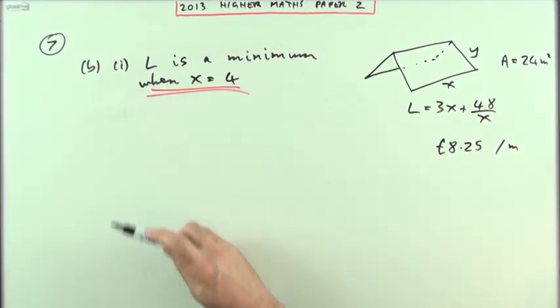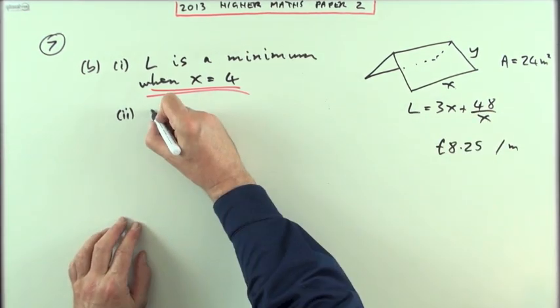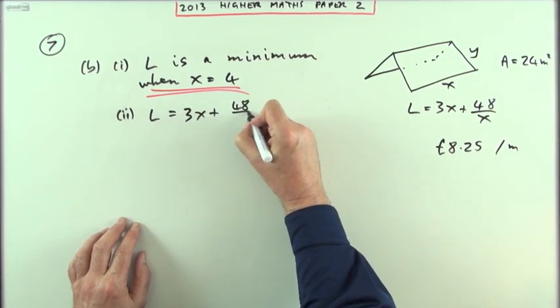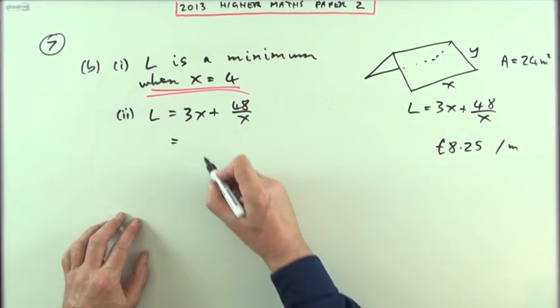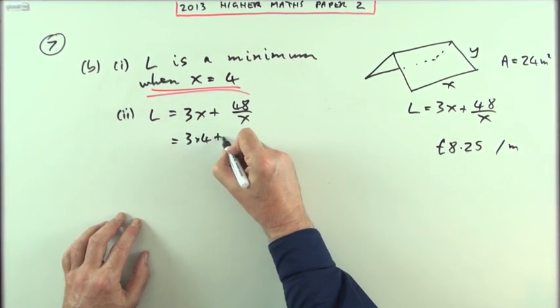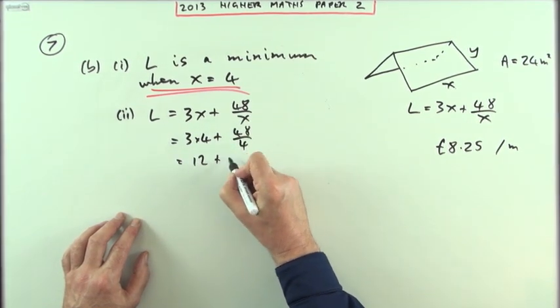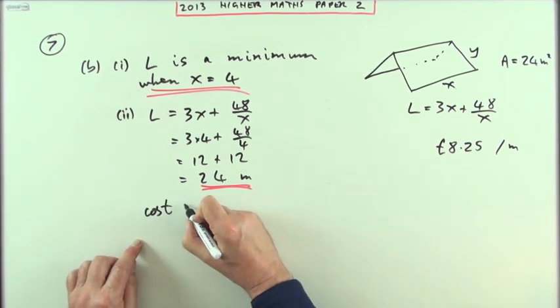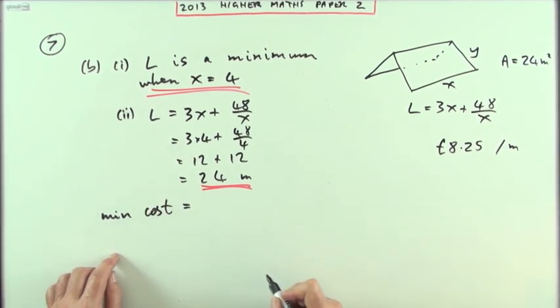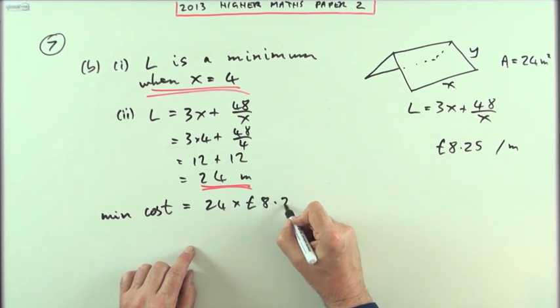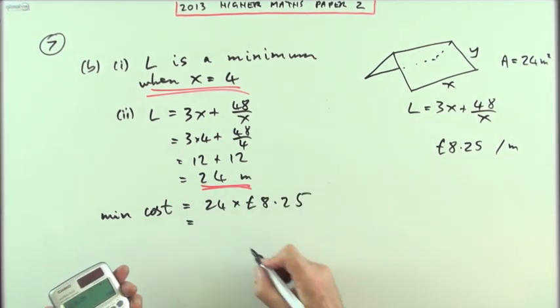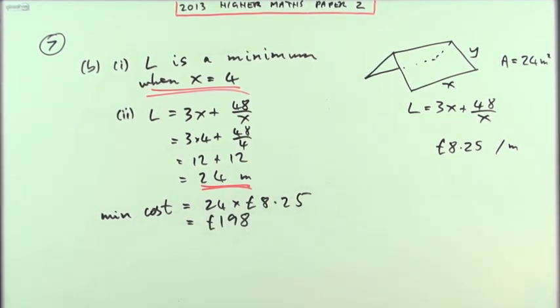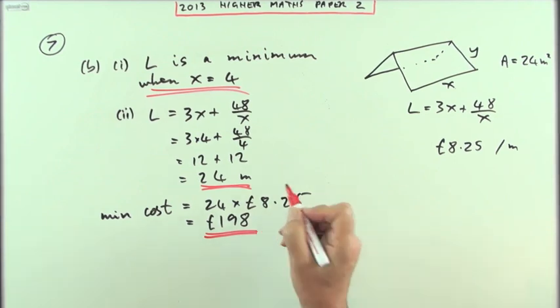And the second part, which says what is the minimum cost then of that frame. Well, I just need to know the length of the frame. There's the expression there so I could work out. L equals 3x plus 48 over x. There's no need to go back and work out what y is and so on. I've got the value of x here. So it'll be 3 times 4 plus 48 over 4, which is 12 plus 12, which is 24. And that means you'll need 24 meters of rod. The rod is 8 pounds 25 a meter. So that means that this cost, or in particular, this minimum cost, will be 24 lots of 8 pounds 25. Which gives you 198 pounds. There you are, cheaper than a night at the Hilton.